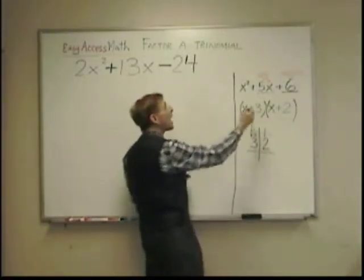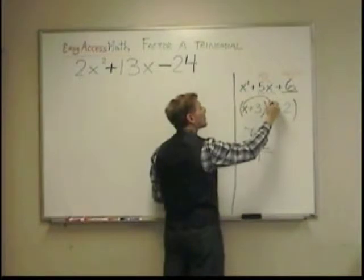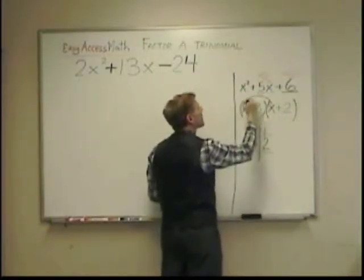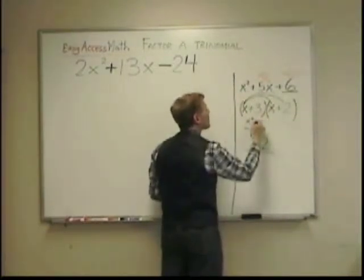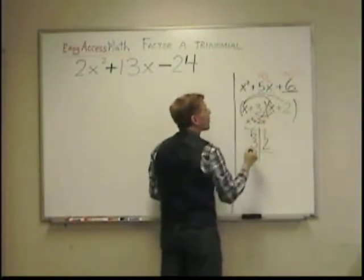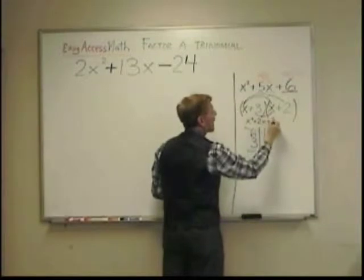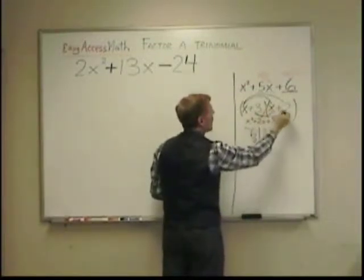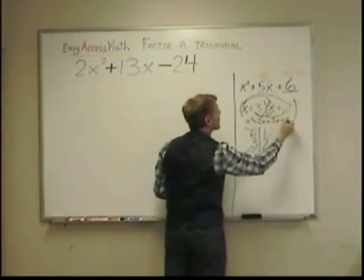And to check, I could FOIL. x times x is x squared. x times two is plus two x. Plus three and x is plus three x. And last, three times two is plus six.